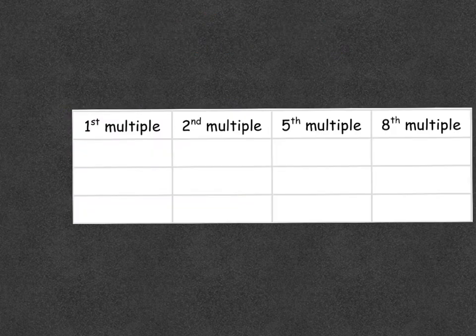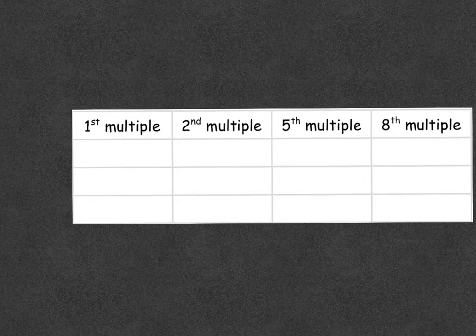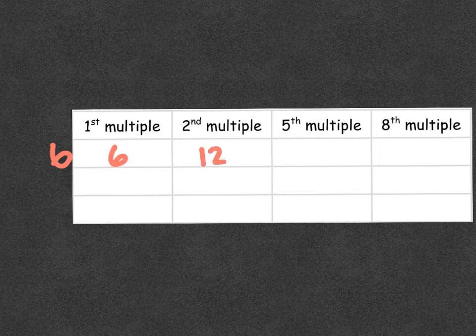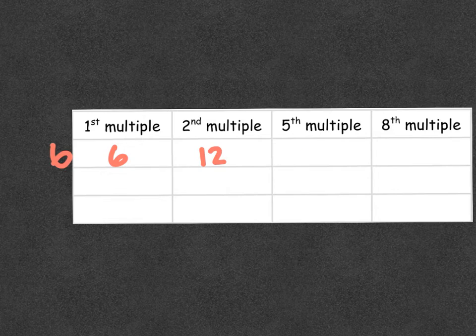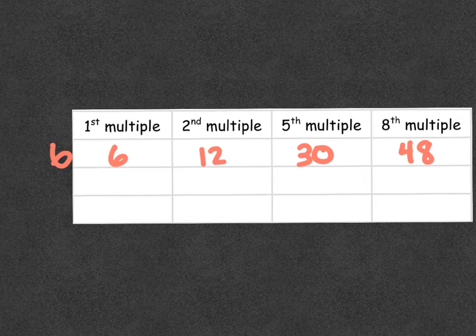Now, sometimes they won't ask you to list them, sometimes they'll ask you a certain multiple of a number. So let's go back to that number six. The first multiple of six is six. The second multiple, we can put twelve there. The fifth multiple, or we could think what is six times five, would be thirty. The eighth multiple, or six times eight, is forty-eight.